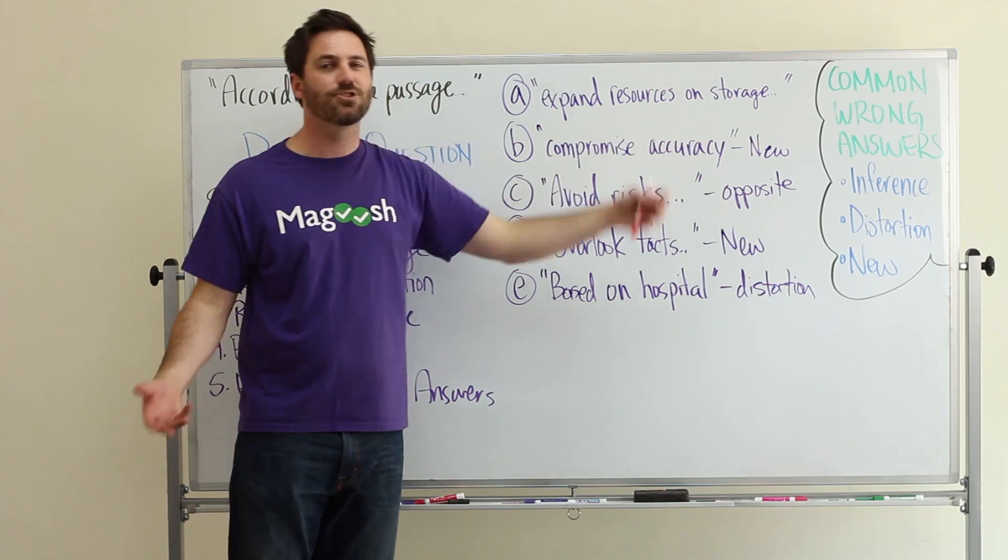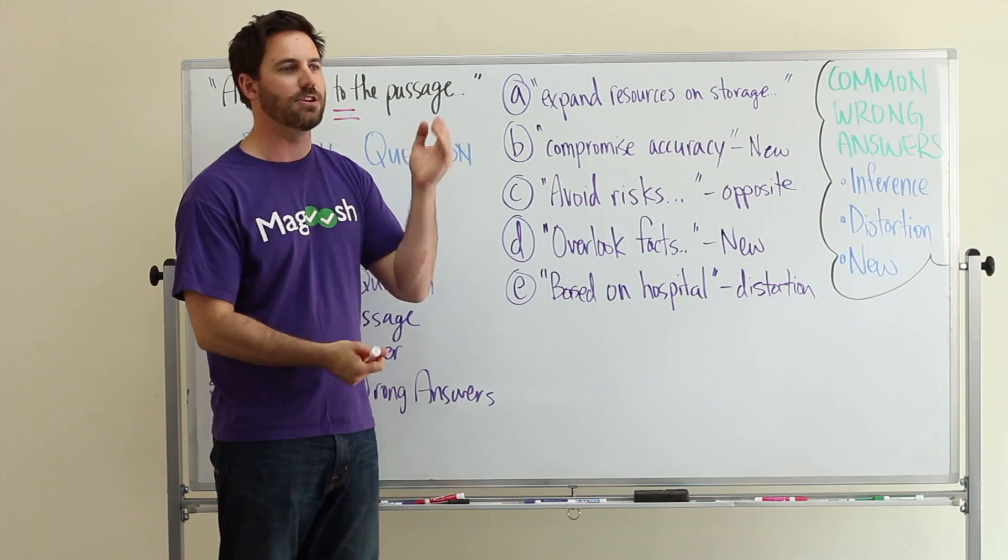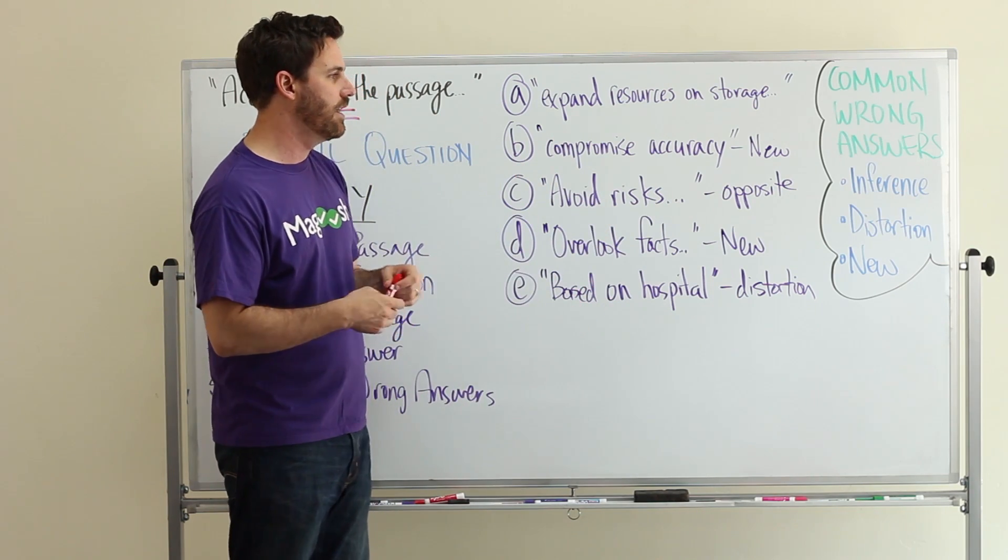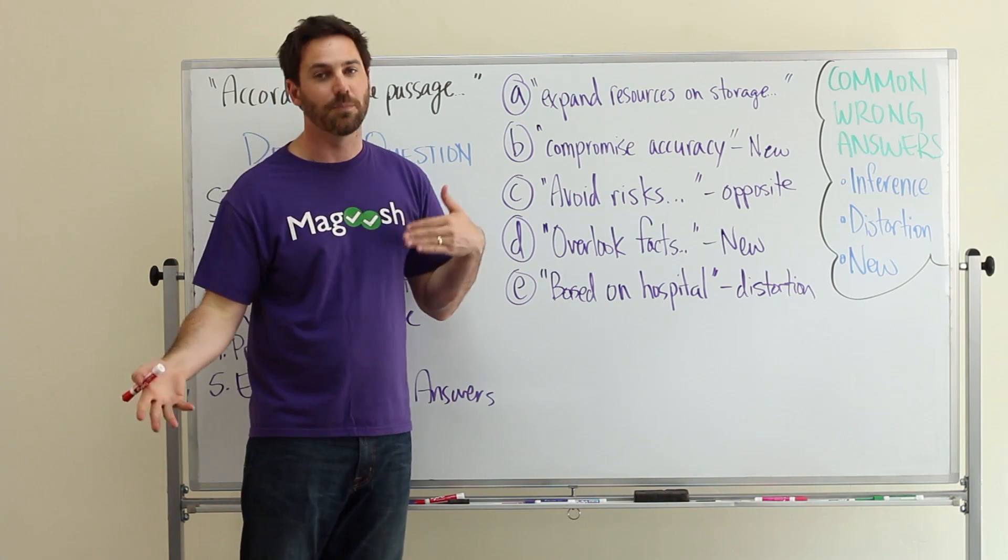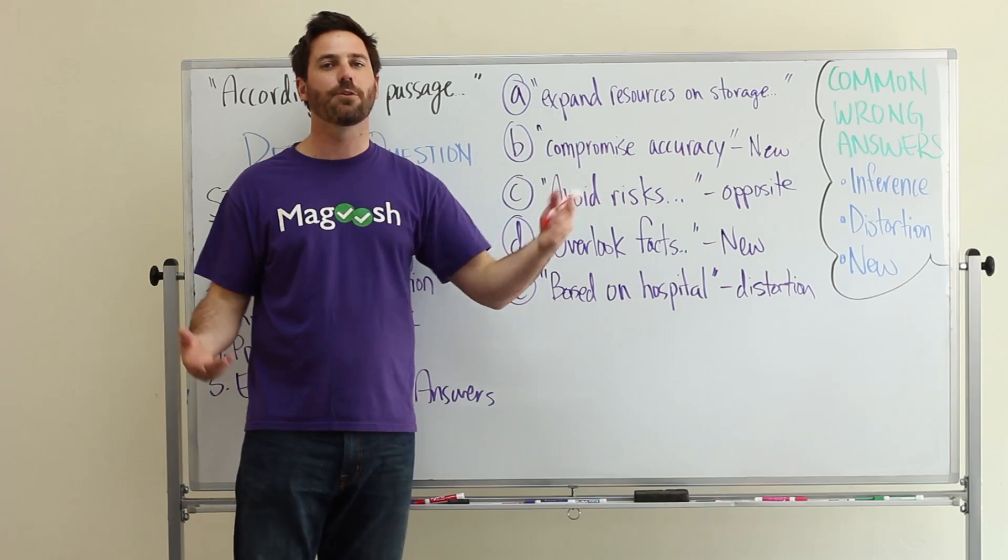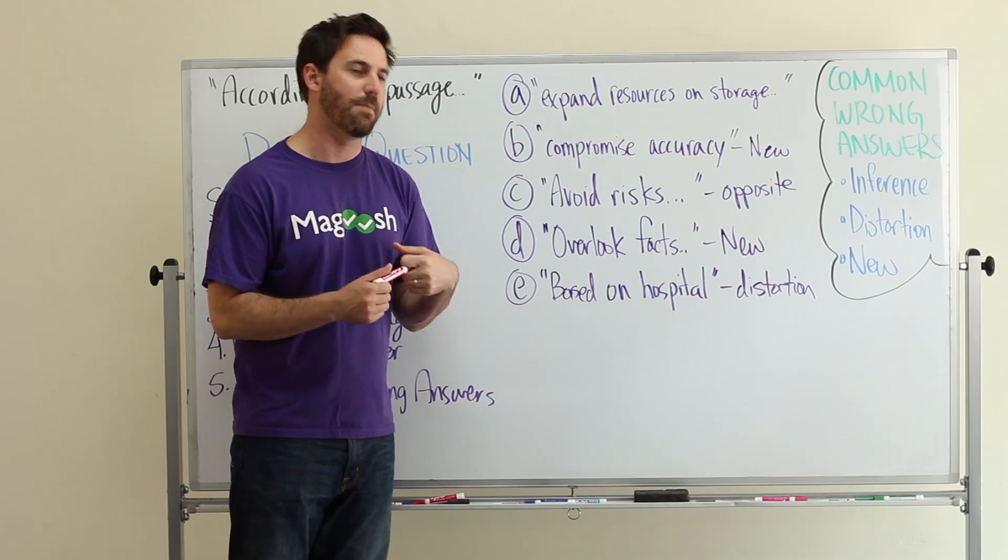Answer choices that distort the information in the passage, either present information in a different light or the opposite of what is being said, or maybe information from a different part of the passage that doesn't relate. And then finally, just new information - things that aren't covered in the passage.